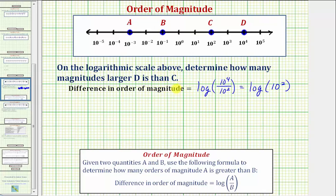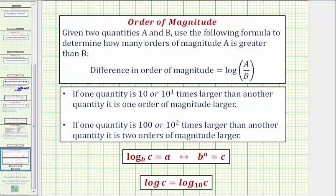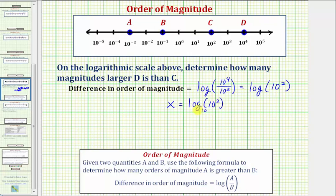So if we let x be equal to the difference in the order of magnitude, we can say x equals the common log of ten to the second. If we don't recognize the value of x, we could write the log equation as an exponential equation. If we have log base b of c equals a, the equivalent exponential equation would be b to the a equals c, where b is the base, a is the exponent, and c is the number. Because we have common log, we know this is log base ten, so the equivalent exponential equation would be ten raised to the power of x must equal ten to the second.